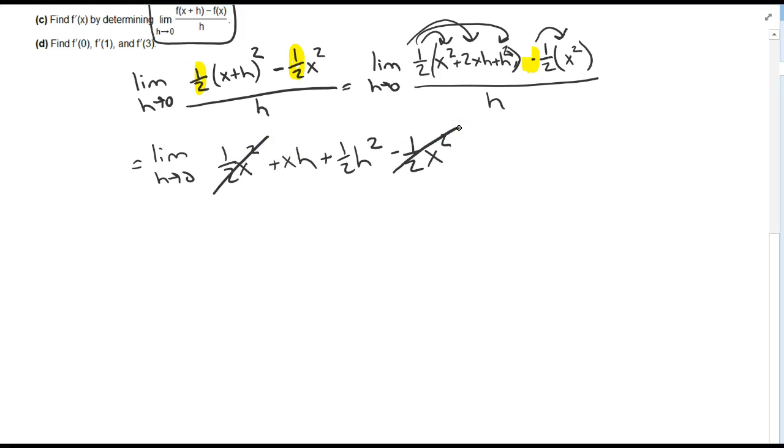The minus 1 half x squared and the 1 half x squared cancel. So the limit as h goes to 0, I'm going to pull out an h. I get x plus 1 half h all over h. If I pull out h from h squared, I'm left with an h.